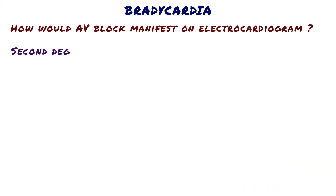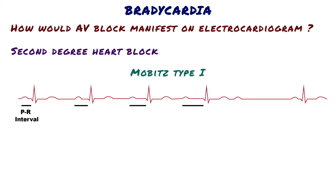Second degree heart block is further divided into two types. In Mobitz type 1, the PR interval progressively increases until finally an atrial impulse is not conducted at all. This leads to a pause, followed by a normally conducted beat, and then the cycle repeats.